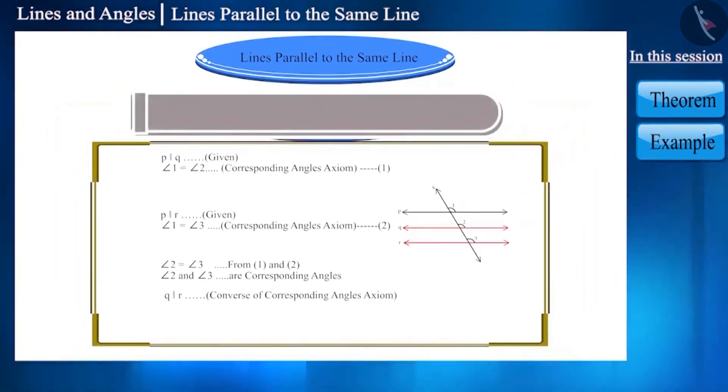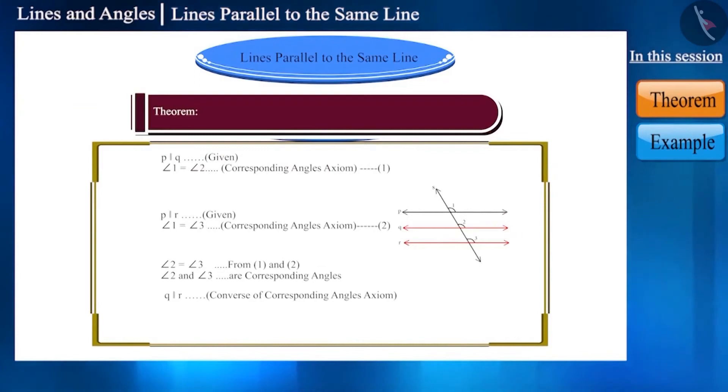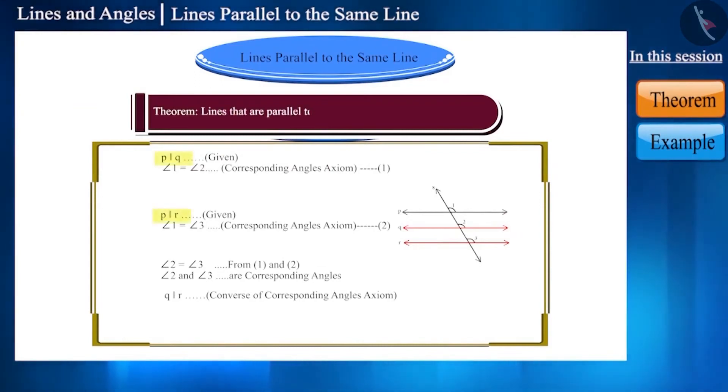If line A is parallel to line B, line A is parallel to line C, and line A is parallel to line D, then all these lines will be parallel to each other.